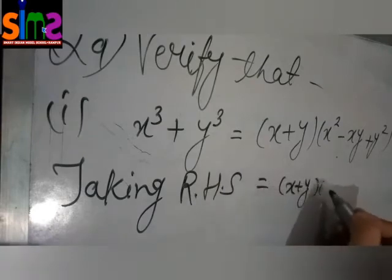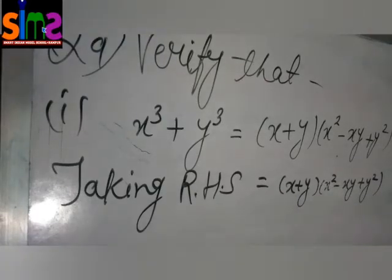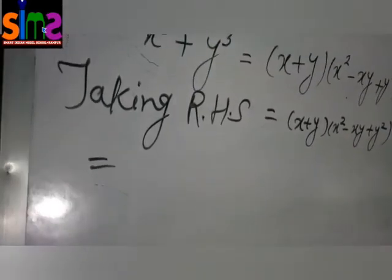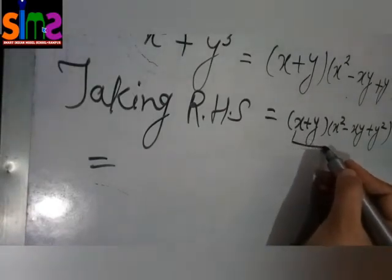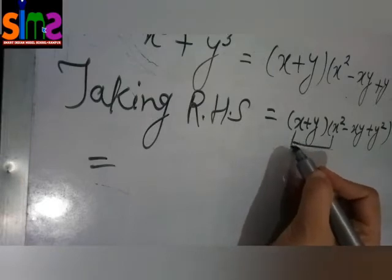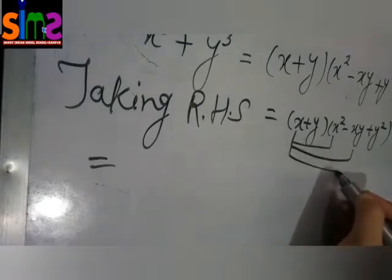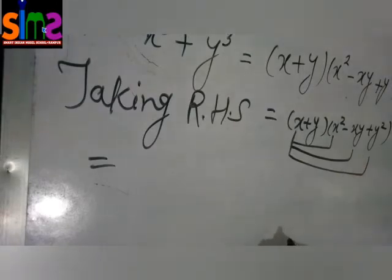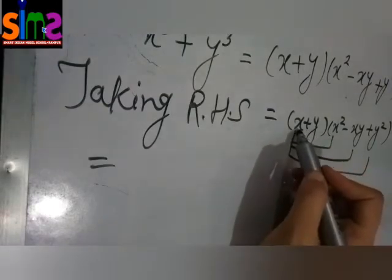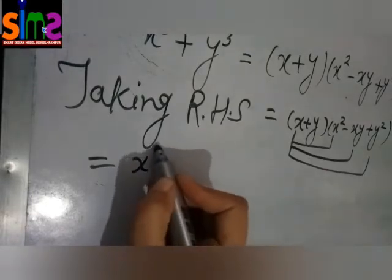x plus y, x square minus xy plus y square. We need to multiply these two brackets. First of all we will multiply this x to this x square. Then we will multiply this x to minus xy. And last we will multiply this x to y square. When we multiply this x to x square we will get x cube.